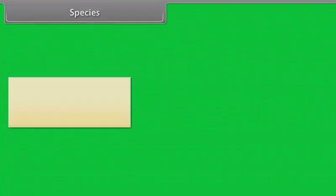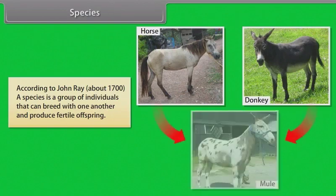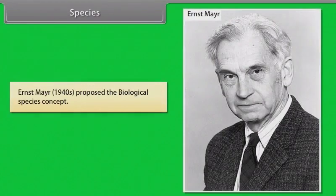According to John Ray (around 1700), a species is a group of individuals that can breed with one another and produce fertile offspring. Ernst Mayr, in the 1940s, proposed the biological species concept.